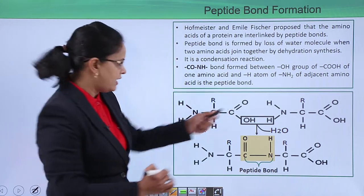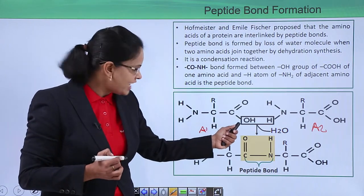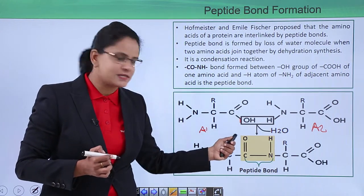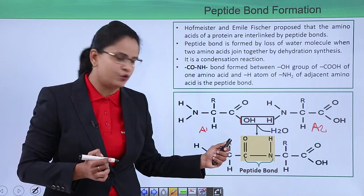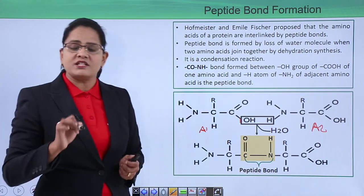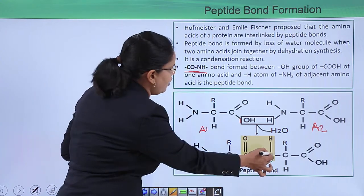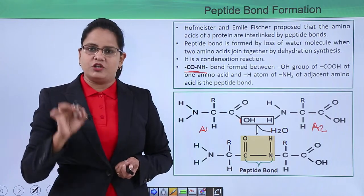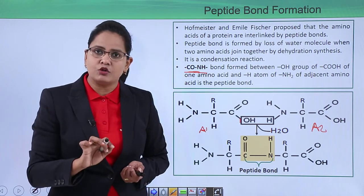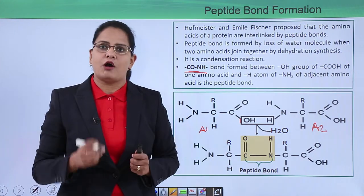Here is amino acid number one and amino acid number two. As you can see, this is a carboxyl group (COOH) and this is an amino group (NH2). The OH group from the carboxyl end and the hydrogen from the amino group condense together — a water molecule is released and a peptide bond is formed. The nature of the peptide bond is C-O-N-H, formed between the OH of the carboxyl group of one amino acid and the H of the amino group of another amino acid.